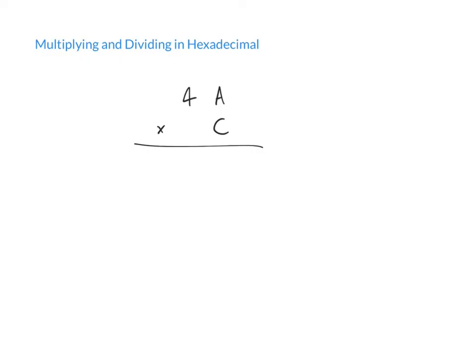Remember that our hexadecimal system is base 16, which means we have 16 possible digits. They are 0 through to F, and they correspond with the decimals 0 to 15 — so 16 possible values if you count the 0 as well.